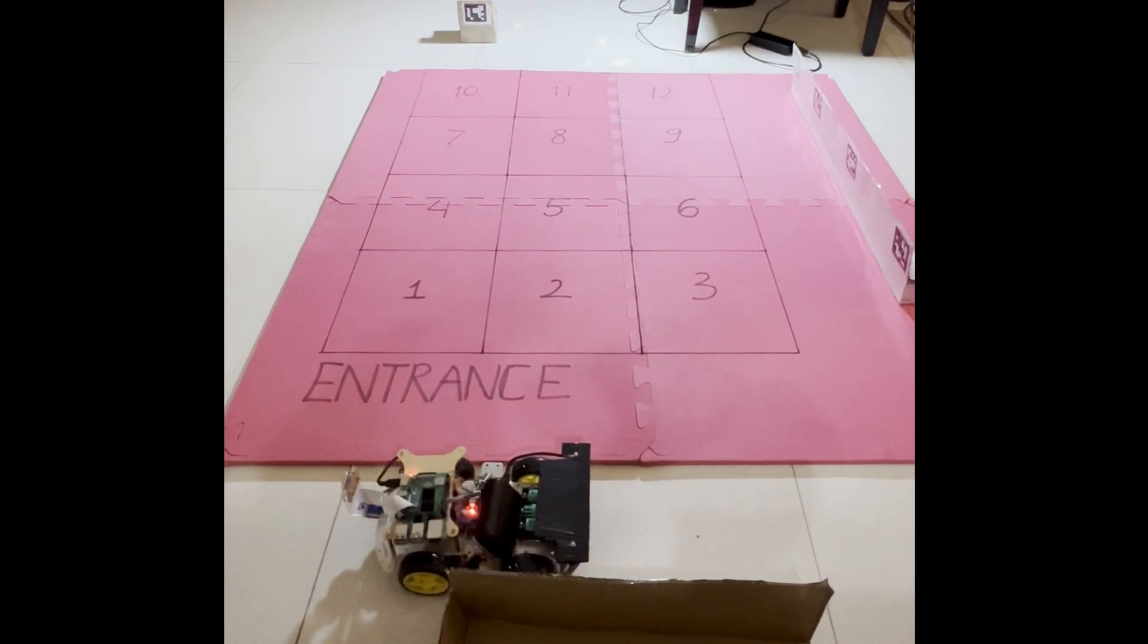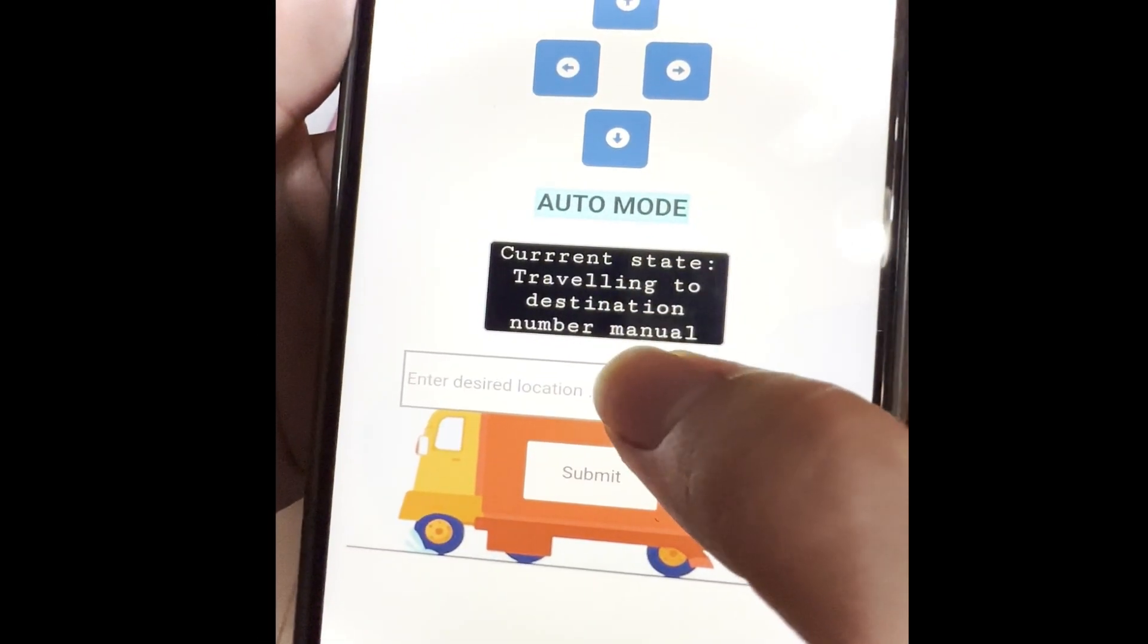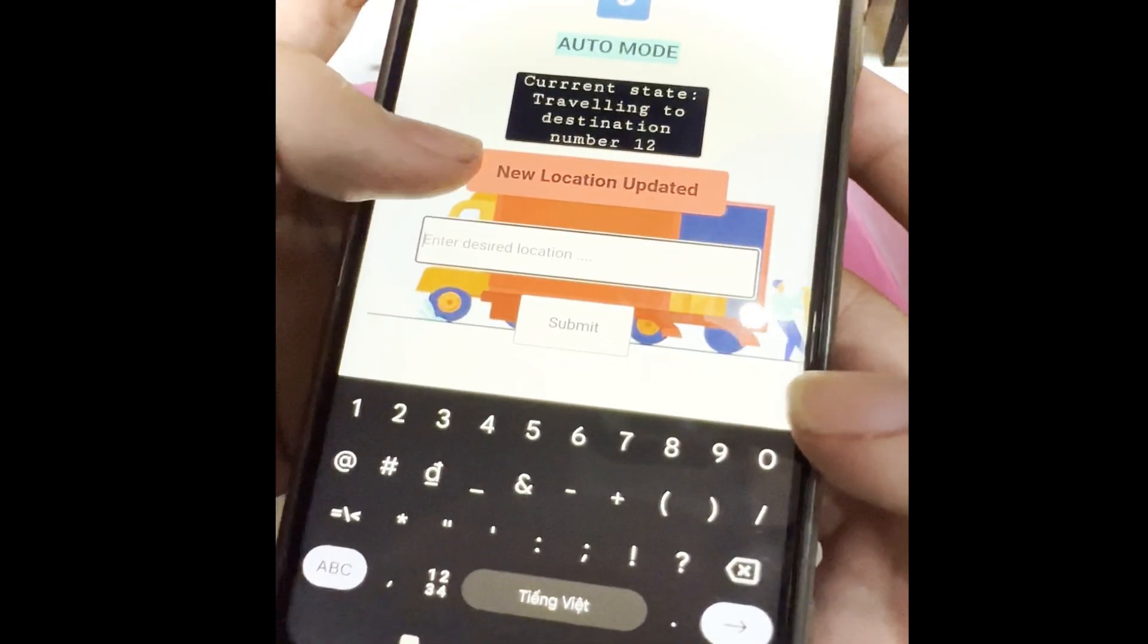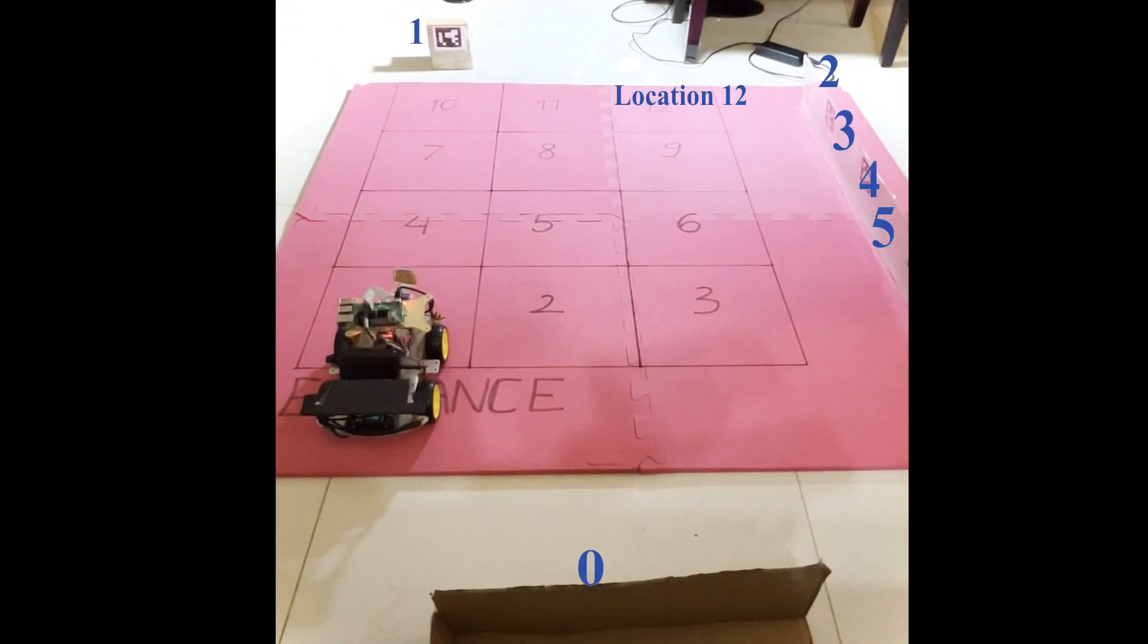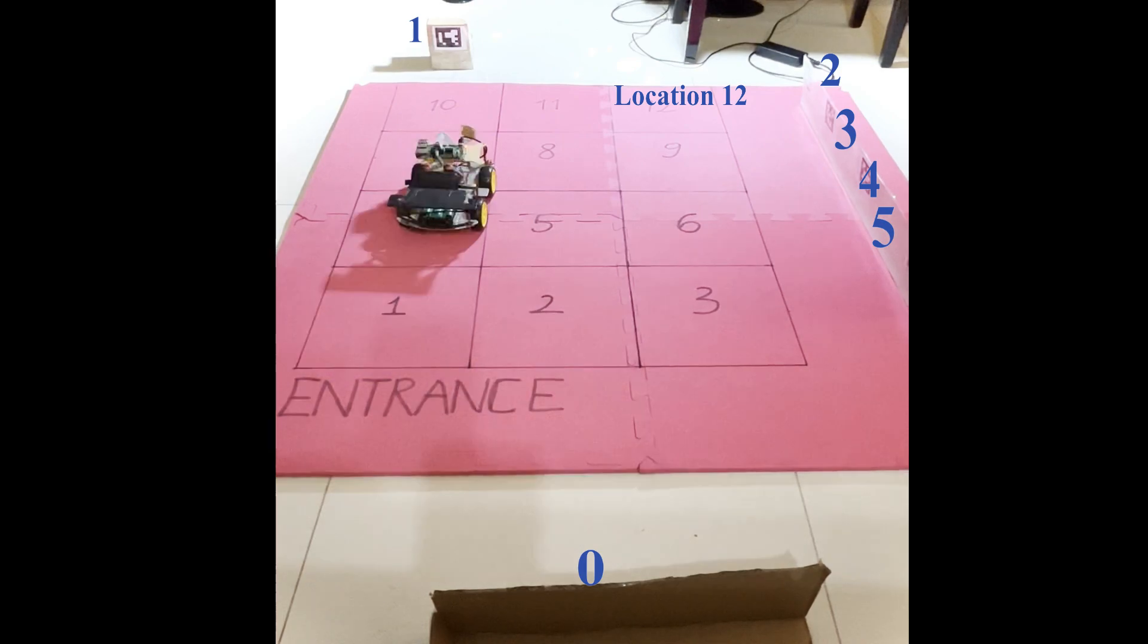In the last scenario, travel to destination 12. Users now input number 12 through the web UI. After a new location is submitted, a notification box appears and the current state of the robot is changed to traveling to location 12. Similar to the previous scenarios, our robot will find corresponding markers of number 12 and travel to that destination.